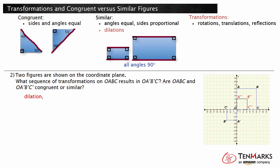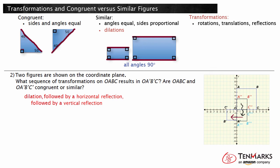After the dilation, there are two rectangles of the same size and shape. Now the dilated figure can be reflected onto the target figure O, A', B', C'. Reflect the dilated figure horizontally. Finally, the last step of this sequence is a vertical reflection to the left. So the complete sequence of transformations from O, A, B, C to O, A', B', C' was a dilation, followed by a horizontal reflection, followed by a vertical reflection.